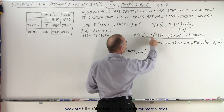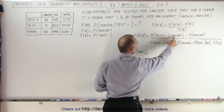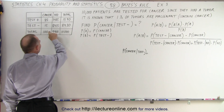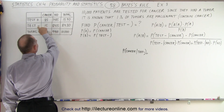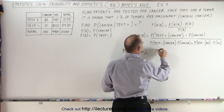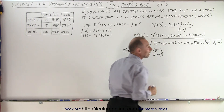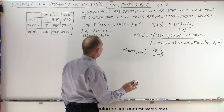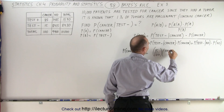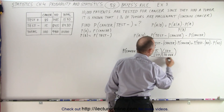So the probability that the patient tests negative given the patient has cancer: we have 100 patients that have cancer and 15 that will test negative even though they have cancer, so that will be 15 out of 100, times the probability that the patient has cancer from the general population with tumors, which is 1% or 100 out of 10,000. So that goes in the numerator.